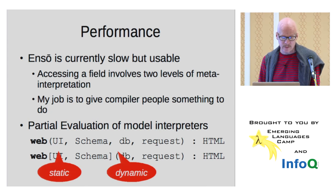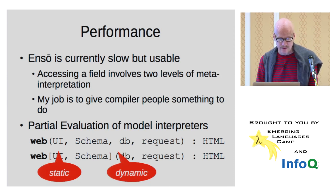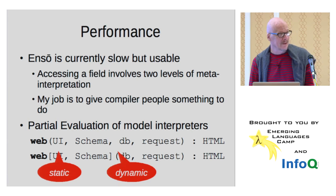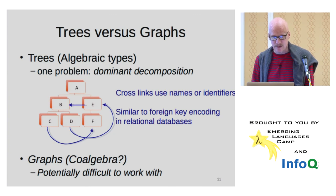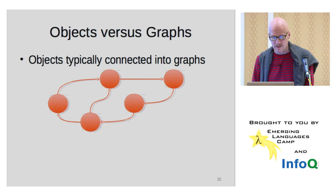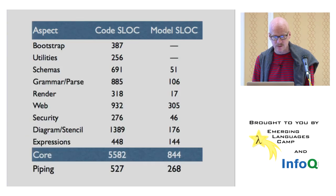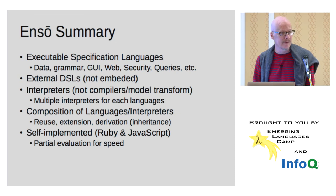So ENSO is currently slow but usable. We're looking at using partial evaluation to improve its performance. Haven't really done that yet in full, but we've done some experiments. And my job is to give compiler people something to do, which is make something really slow and then give it to people who can make it really faster. So I'm running out of time. I think I'm going to skip this. Just threw it in here in case I needed a little extra discussion of trees versus graphs. ENSO is based on tree graphs versus trees in general, which makes things a little more complicated.